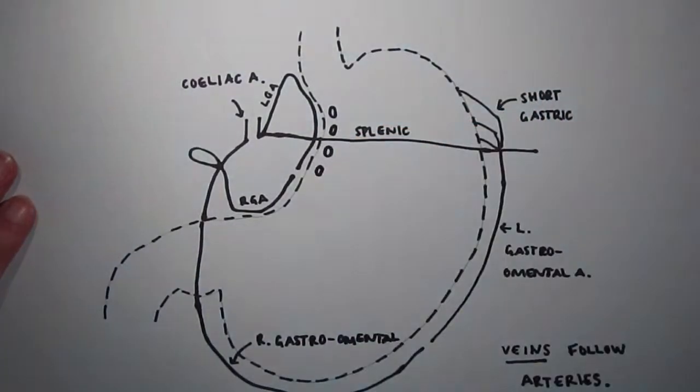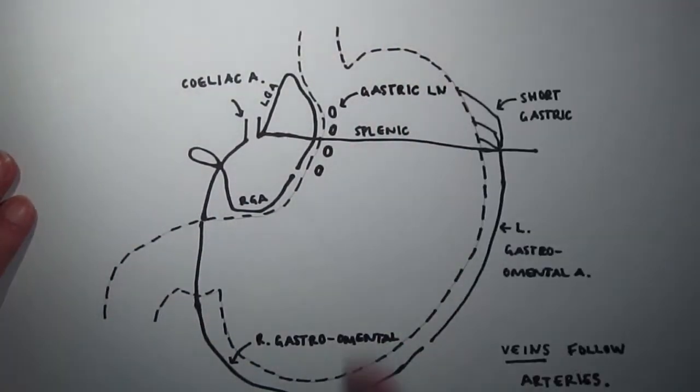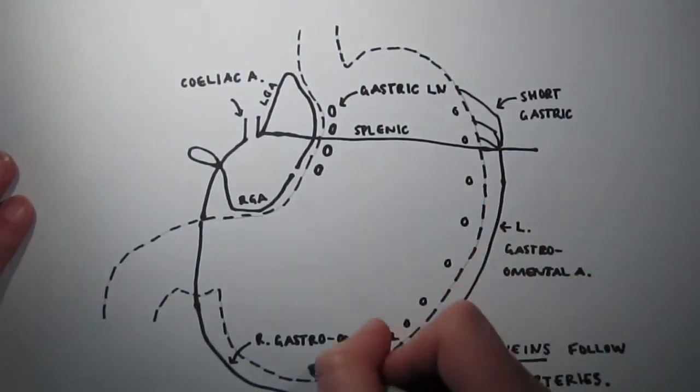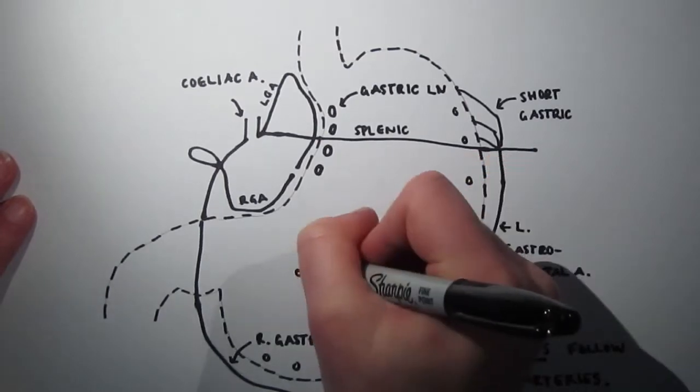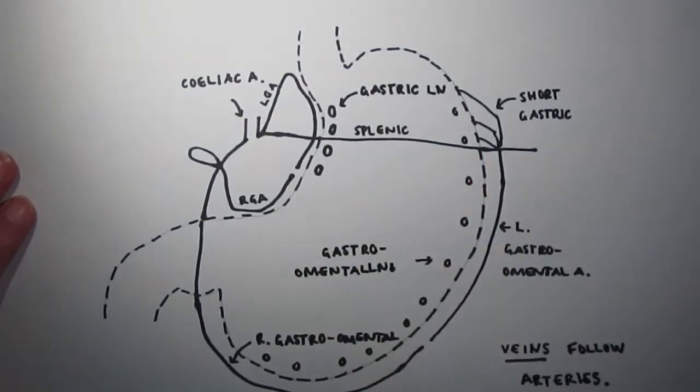The lymph nodes of the stomach are the gastric lymph nodes, the gastro-omental lymph nodes, and the pyloric lymph nodes.